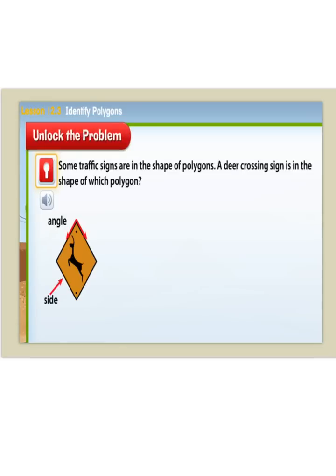Let's unlock this problem. Some traffic signs are in the shape of polygons. A deer crossing sign is in the shape of which polygon? I know this is a polygon because my shape is flat, my sides are straight, and this shape is also closed.